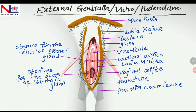Then there is the clitoris, a small erectile tissue which consists of various nerve endings. Its parts are: the glans, which is the exposed region; the body, which is posterior to the glans and covered by the prepuce; and the crura, which are the lateral extended regions. This structure is similar to the male penis as it arouses sexual excitement in females.